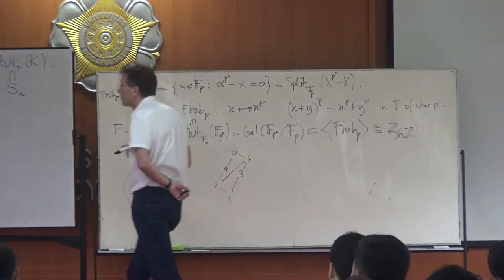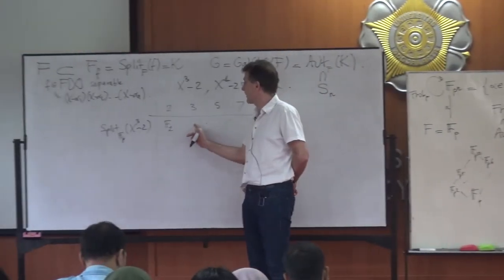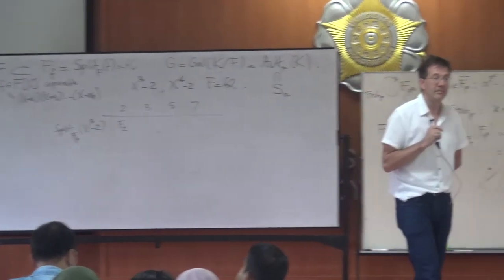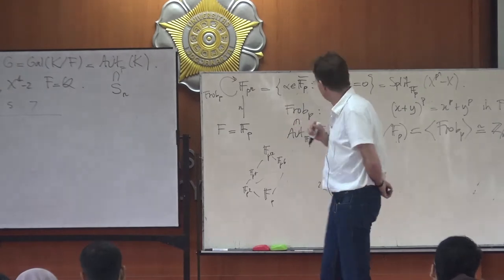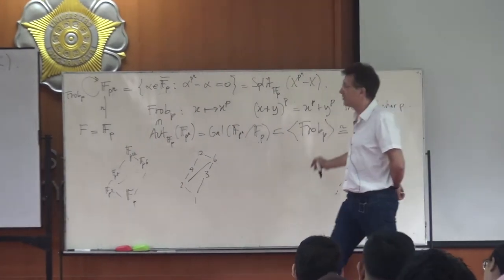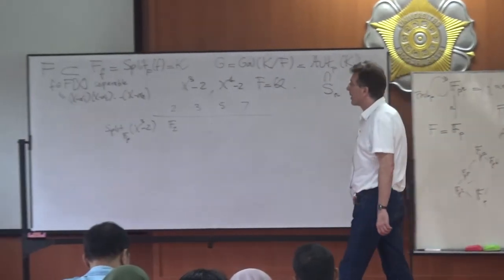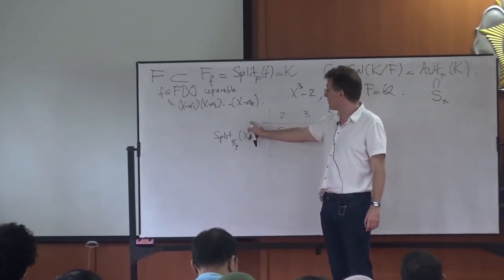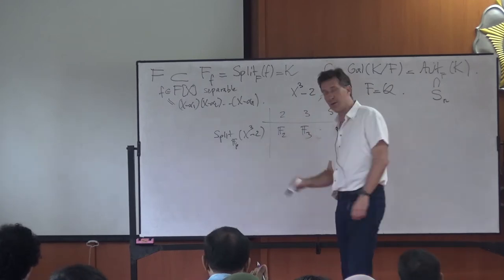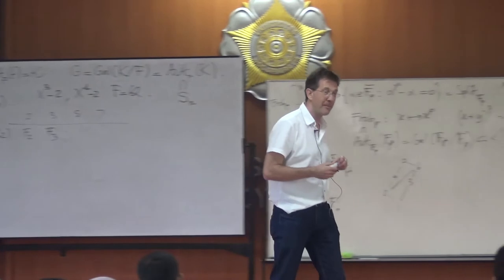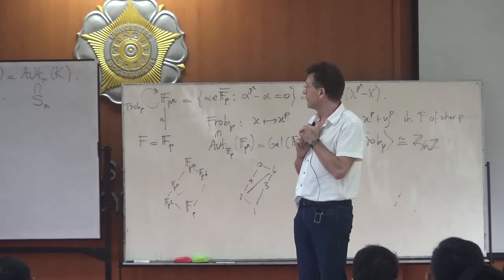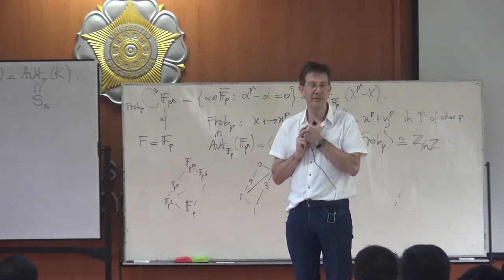Over 𝔽_3, raising to the power 3 in characteristic 3 is easy: x³ − 2 = (x − 2)³, so it again has a triple root equal to 2. The field you get is simply 𝔽_3.